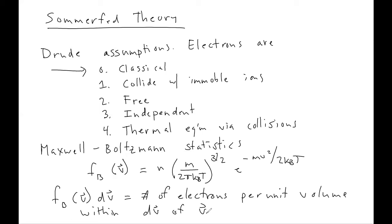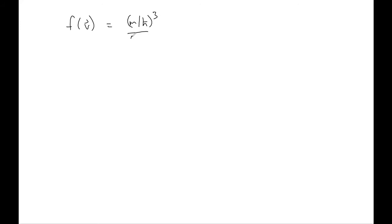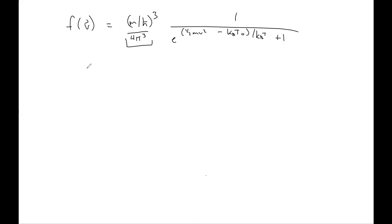Today we're going to start fixing these problems by removing assumption zero. We're going to start thinking about electrons as quantum mechanical objects. We'll solve the Schrödinger equation for free electrons, and we'll build up many-particle energies by assuming that the electrons obey the Fermi-Dirac distribution, which of course they should. Here's the Fermi-Dirac distribution — you may have seen this before.